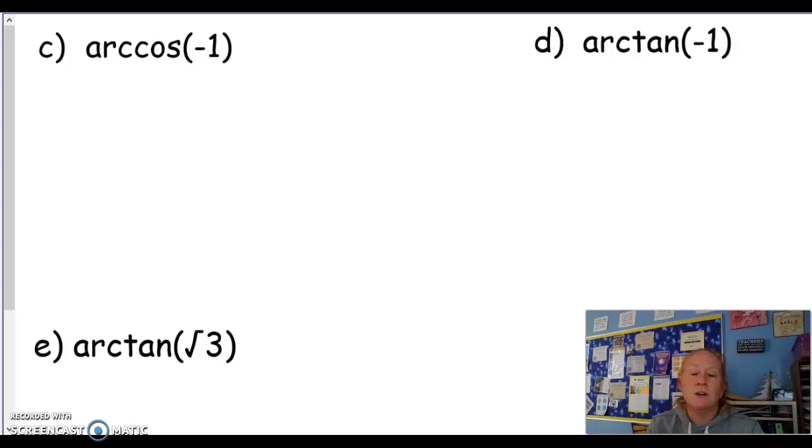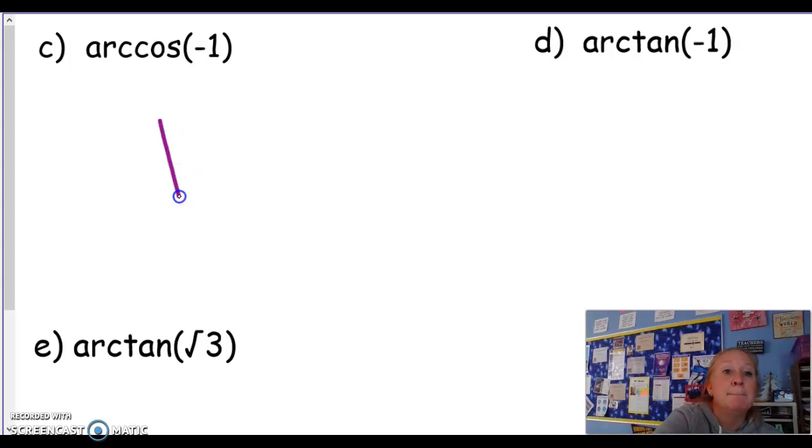Arc cosine is -1. Where is the cosine -1? So we're here. That's 180 degrees, π.